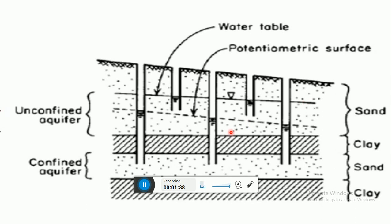Next, the potentiometric surface. If the water levels in wells tapping a confined aquifer are plotted on a map and contoured, the resulting surface — which is actually a map of the hydraulic head in the aquifer — is referred to as the potentiometric surface.